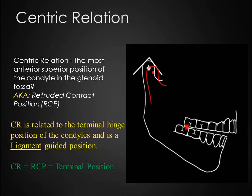Now we will look at Centric Relation or CR. CR can also be referred to as Retruded Contact Position or RCP, and has also been referred to as the Terminal Position. This is the most widely debated term and has many definitions, some of which are contradictory. For our purposes, we will define CR as the most anterior superior position of the condyle in the glenoid fossa. CR is a ligament-guided position. For the purpose of the boards, CR equals RCP equals Terminal Position.